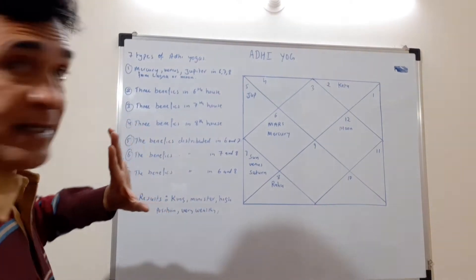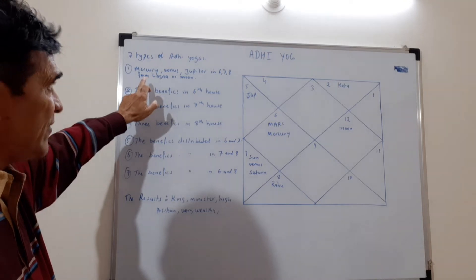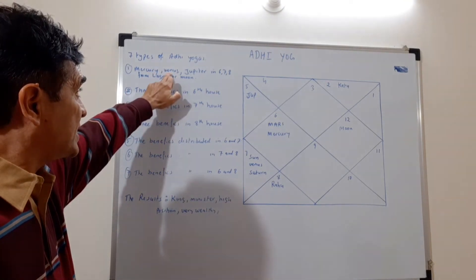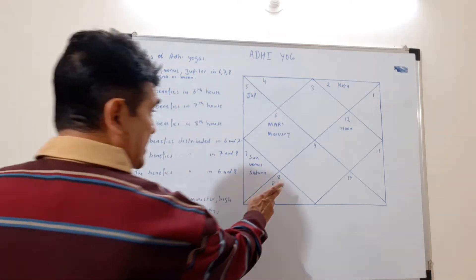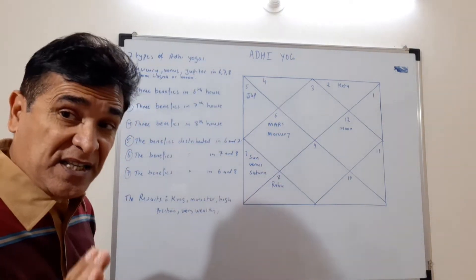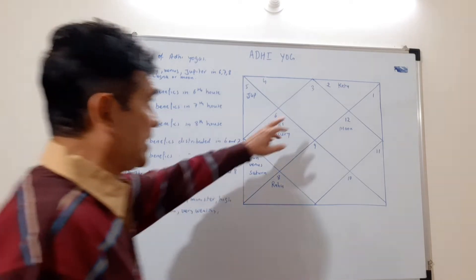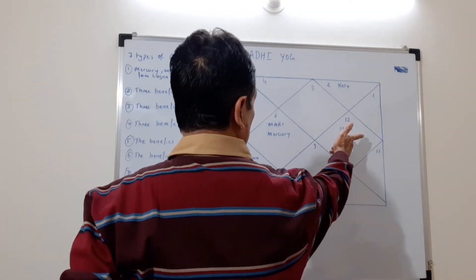The first type forms when you have Mercury, Venus, Jupiter in the sixth, seventh and eighth house, either from Lagna or from Moon. So either it is from the Lagna or you have to see Moon - it is 1, 2, 3, 4, 5, 6, 7, 8.